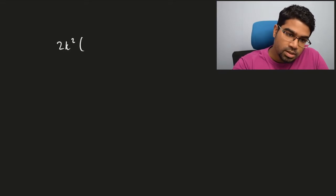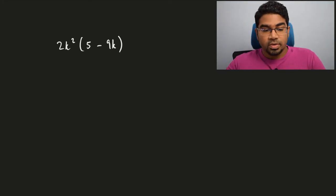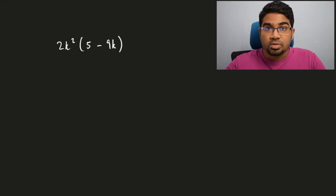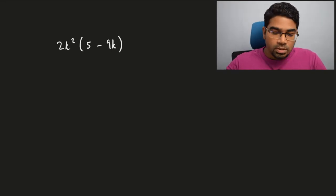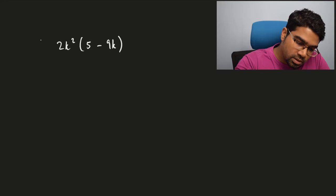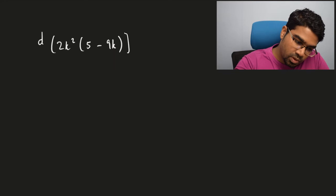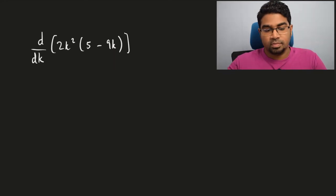We can also apply the formula when we don't have y in terms of x — so when we just have an expression. For example, let's say we had 2k squared multiplied by (5 minus 9k). If we wanted to find the first derivative of this expression, we differentiate with respect to k.